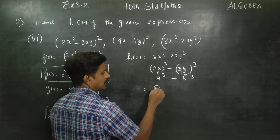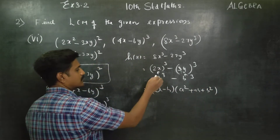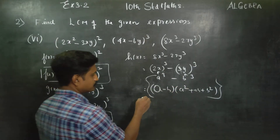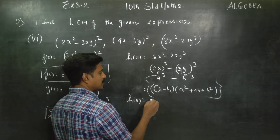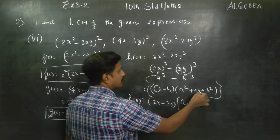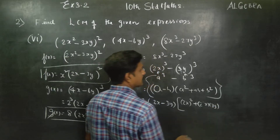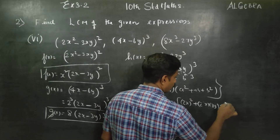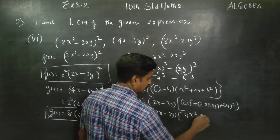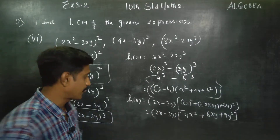What is a cube minus b cube formula? a minus b, into a square plus ab plus b square. In the formula, a is 2x, b is 3y. So: 2x minus 3y, plus b square, plus 3y whole square — this is simply 4x square, 6xy, 9y square. This is h of x.